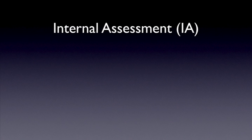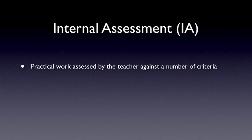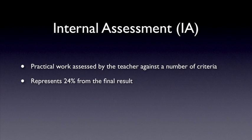The internal assessment, IA for short, refers mainly to the practical work done by the student and assessed by the teacher according to a set of clearly defined criteria. Not all practical work is internally assessed. Your internal assessment grade makes 24% of your final IB Physics result.